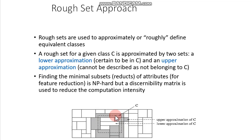In the diagram, the lower approximation represents elements certainly in C, and the upper approximation includes parts that are outside or outer to C. Finding the minimum subset of attributes is NP-hard, but a discernability matrix is used to reduce the computational intensity. This is how the rough set approach works.